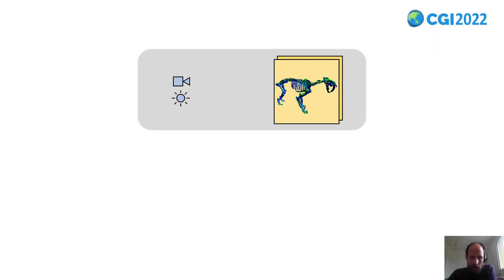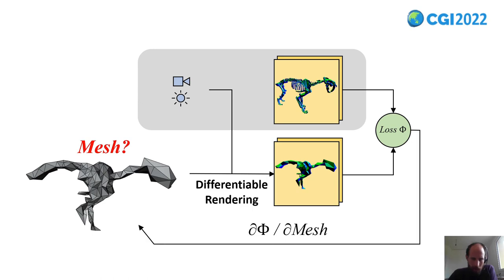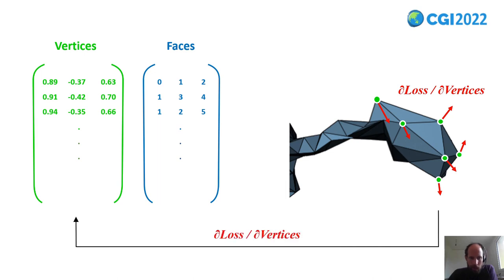Let's say we have an estimation of a triangle mesh. Then we can forward render this estimation, compare the images with the ground truth, and backpropagate the image loss to update the mesh. The problem here is this sloppy partial derivative. We can easily calculate gradients of the vertices and backpropagate them to the vertices matrix, but the faces matrix has integer values and it's not clear how to update this.